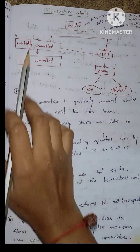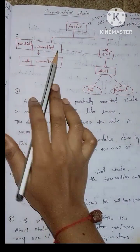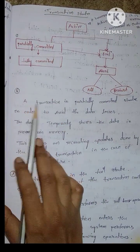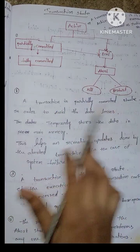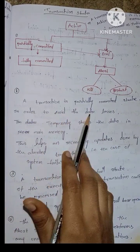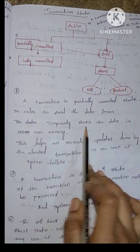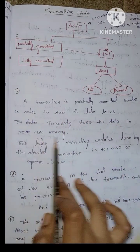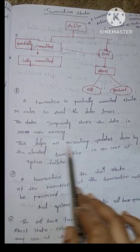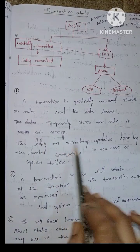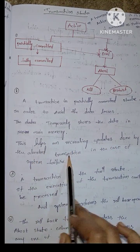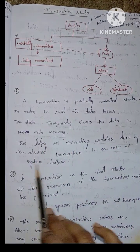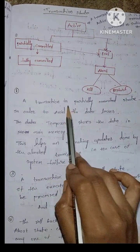Second, Partially Committed State. A transaction in partially committed state, in order to avoid data losses, temporarily stores the data in the main memory. This helps in recreating the updates done by the aborted transaction in the case of system failure.